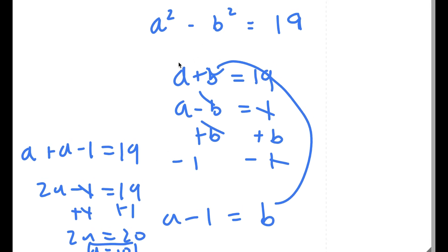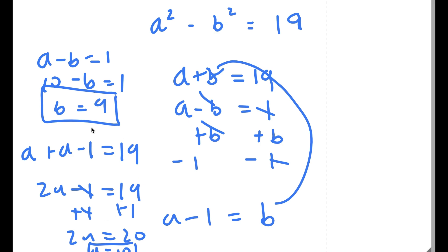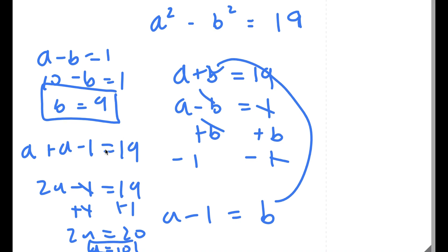So if a is 10, I simply plug into one of these equations. If a minus b is equal to 1 and a is 10, then 10 minus b equals 1, meaning b is 9. So a equals 10 and b equals 9 — these are my answers.